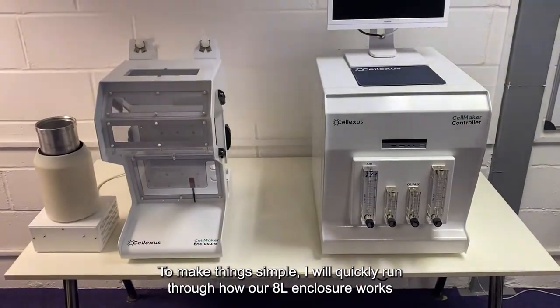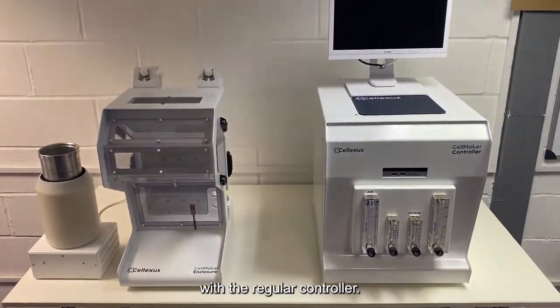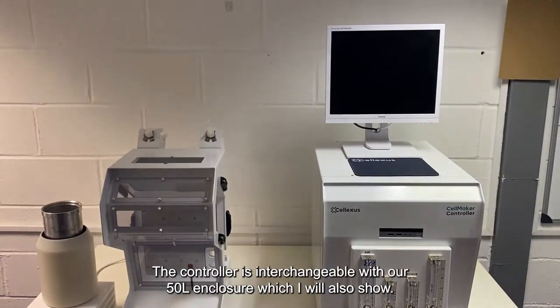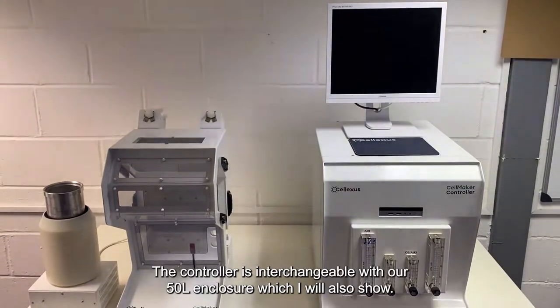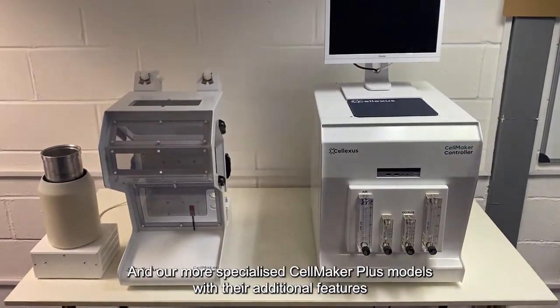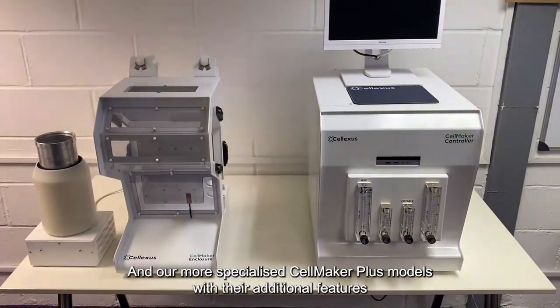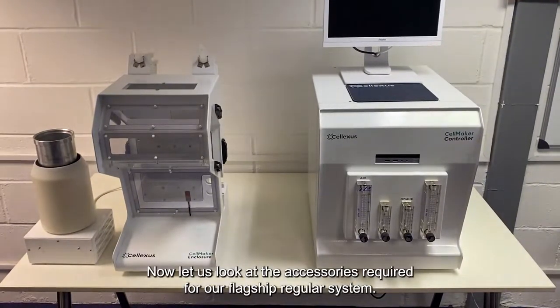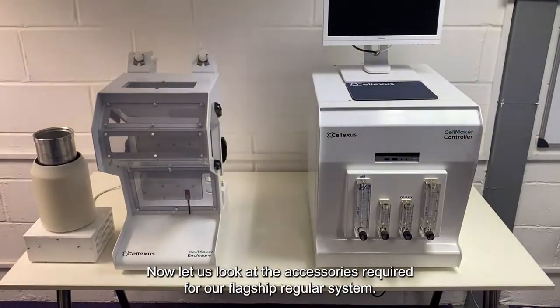To make things simple, I will quickly run through how our 8 litre enclosure works with the regular controller. The controller is interchangeable with our 50 litre enclosure, which I'll show also, and our more specialized CellMaker Plus models with their additional features will be discussed after. Now, let's look at the accessories required for our flagship regular system.